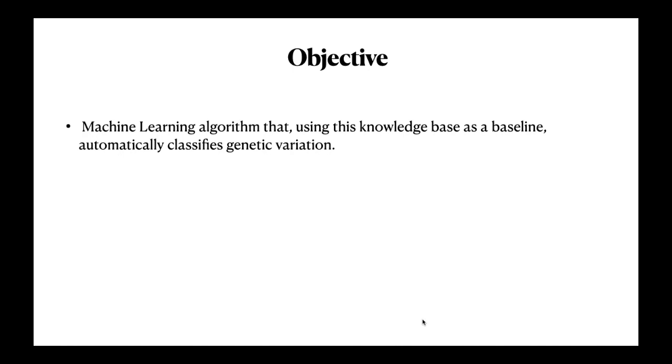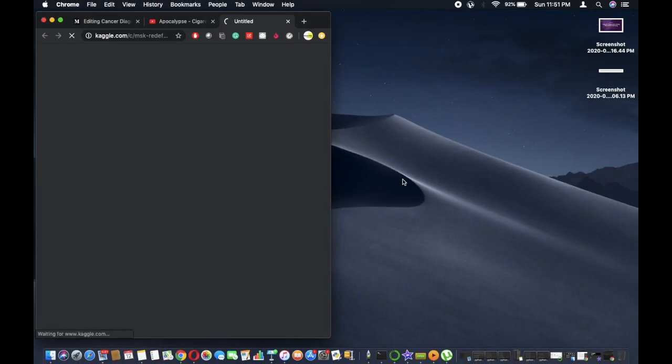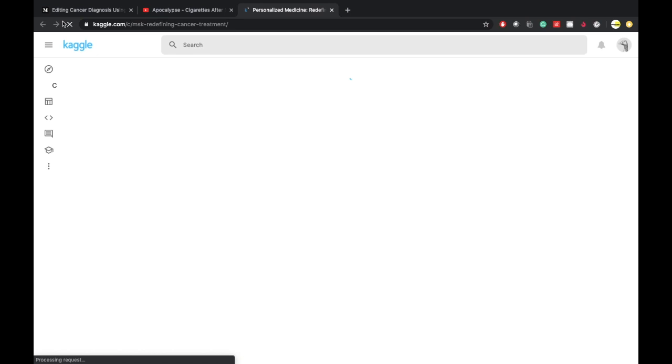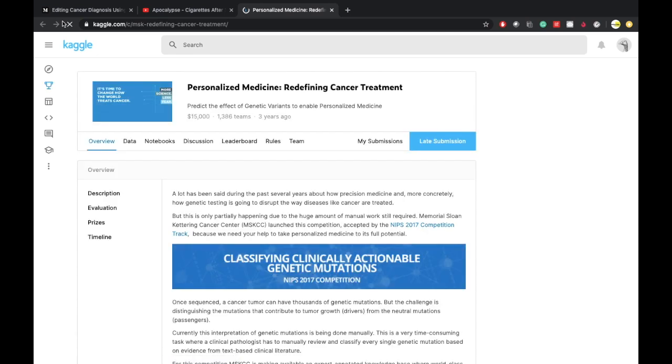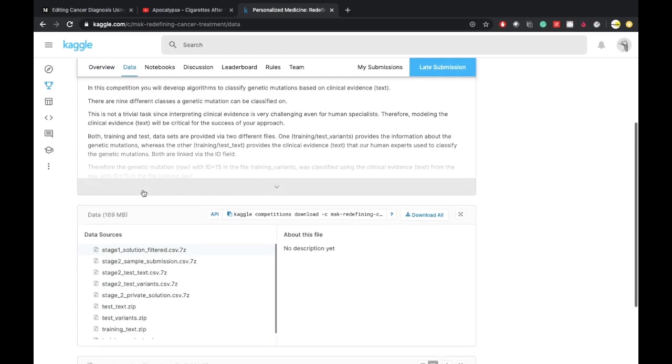After this, our next step is getting the dataset. We will download the dataset from Kaggle.com. The dataset is provided by Memorial Sloan-Kettering Cancer Center, MSKCC. Download training_variants.zip and training_text.zip.